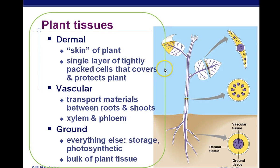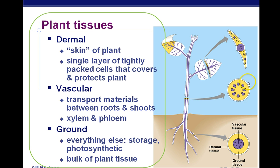Here we have some pictures. Ground tissue, represented by yellow, is shown in three different places: leaves, stem, and roots. Dermal tissue is also shown in three different places: roots, stem, and leaves. Then we have vascular tissue — tubes for transport — in the roots, stem, and leaves.